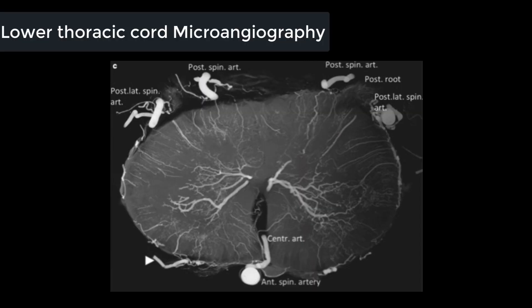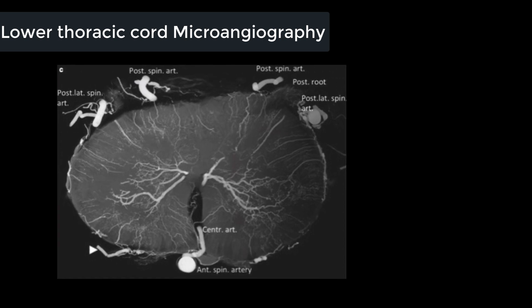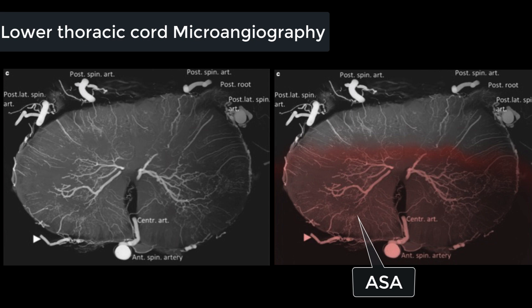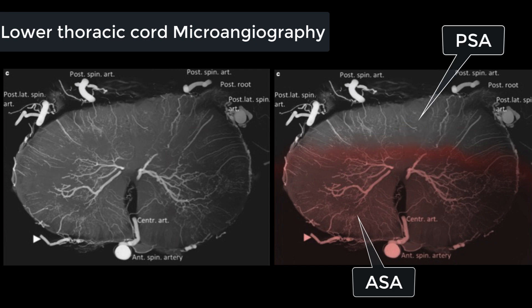This is a microangiographic specimen of the lower thoracic cord displaying the vascular territory of the anterior spinal artery and posterior spinal artery. Approximately the anterior two-thirds of the spinal cord cross-section is supplied by the anterior spinal artery and the posterior one-third is supplied by the posterior spinal artery.